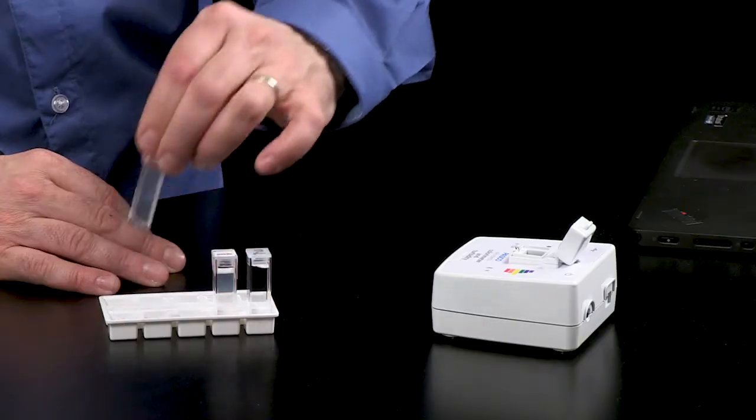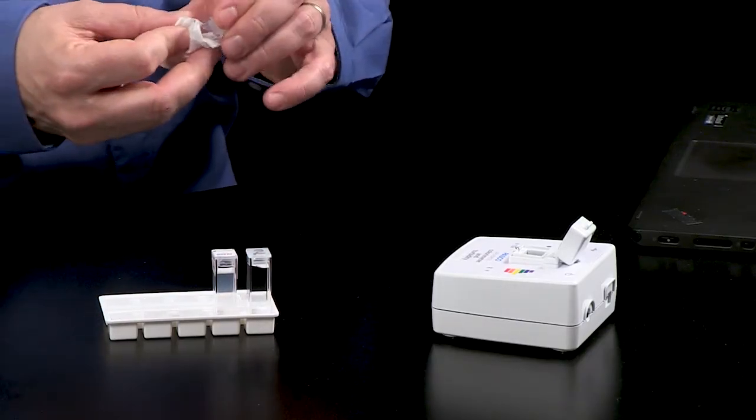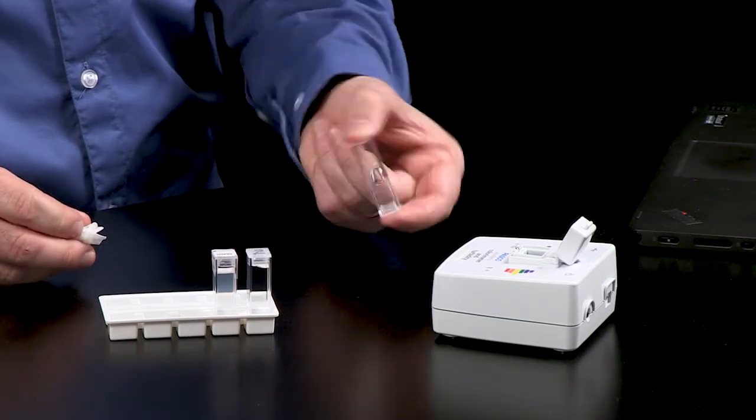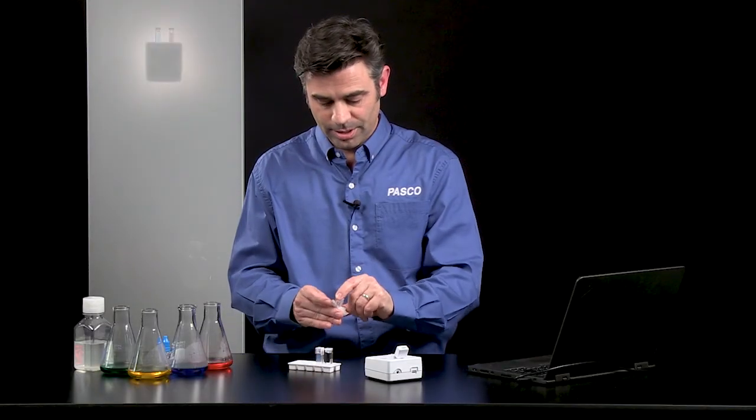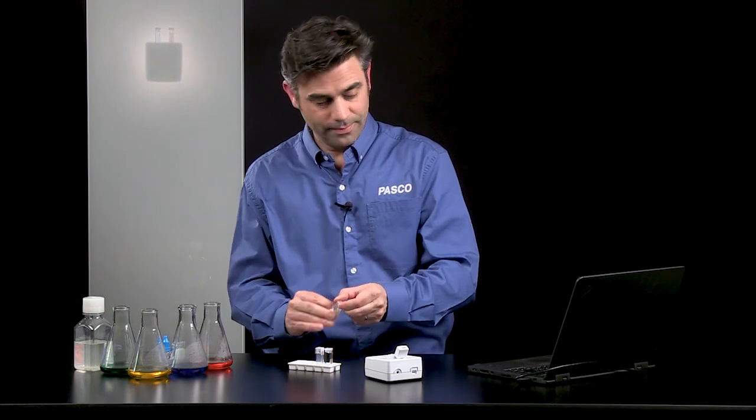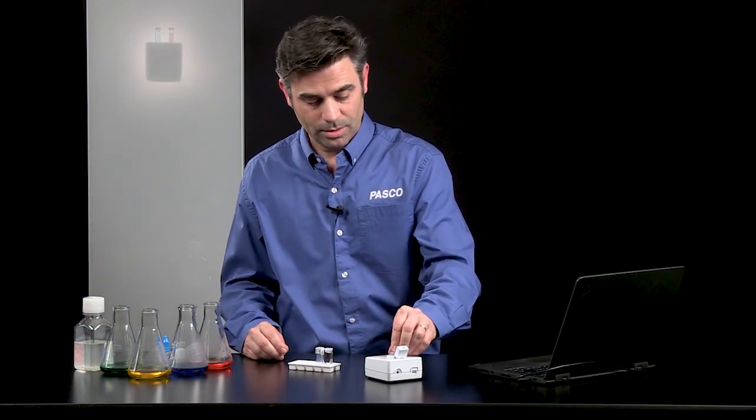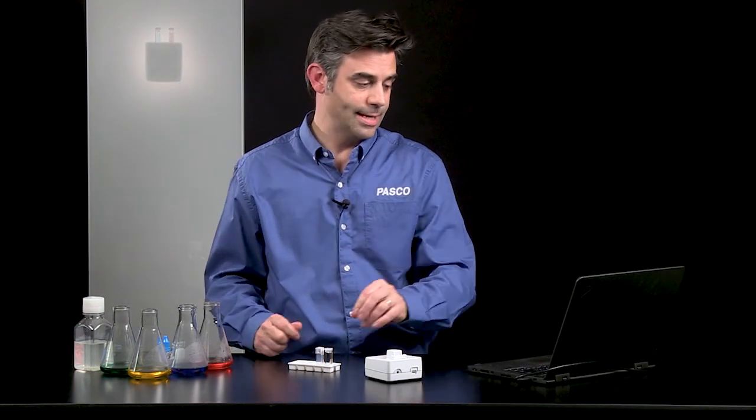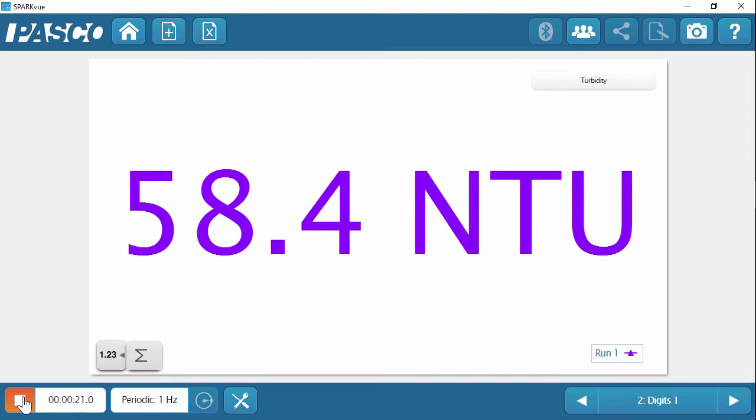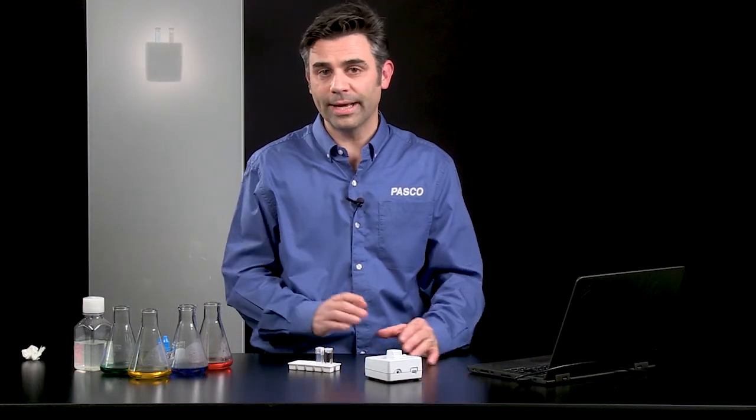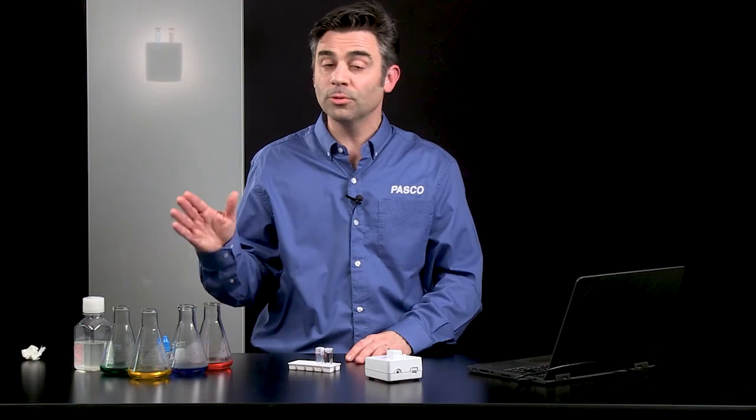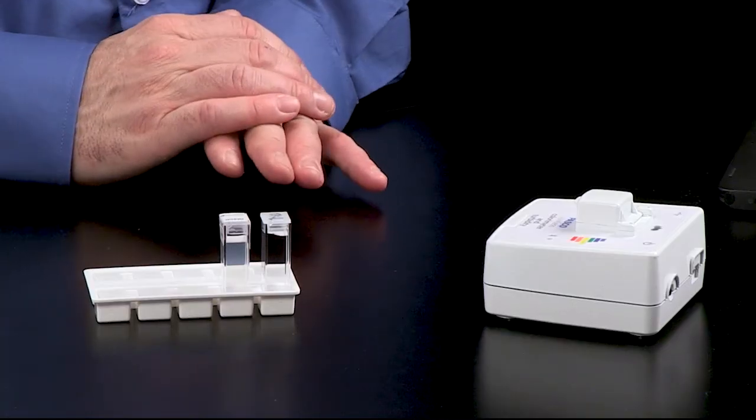I'm going to make sure this is nice and mixed according to the instructions. Make sure those sides are clear and clean. Put that in. And now I'm measuring about 58 NTUs for my unknown. The detector range is from 0 to 400 NTUs with an accuracy of about 5%. So if you are over 400, you will want to dilute your sample.